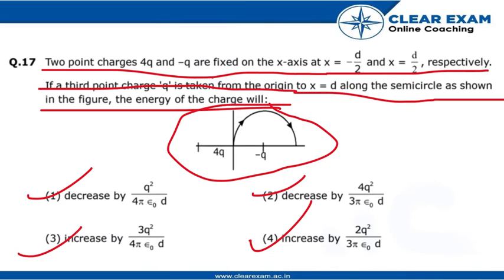Here the negative sign implies the decrease in the energy. So we have to check in which option there is decrease in energy. We can say that option 1 and 2 may be the possible solutions, and option 3 and 4 are eliminated.